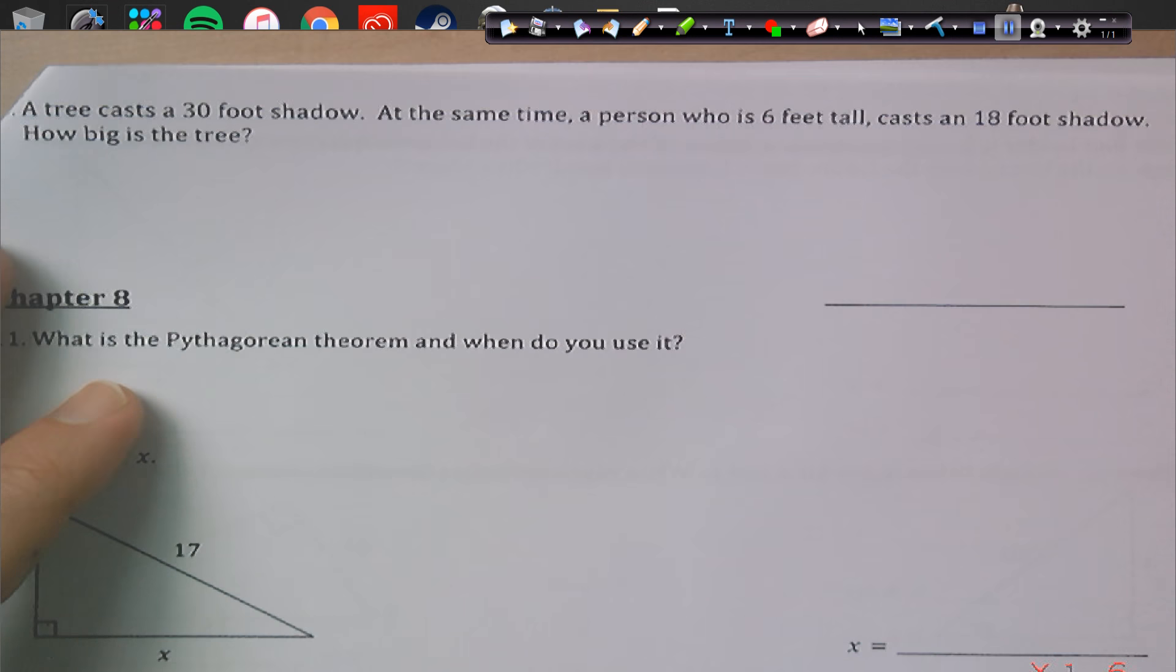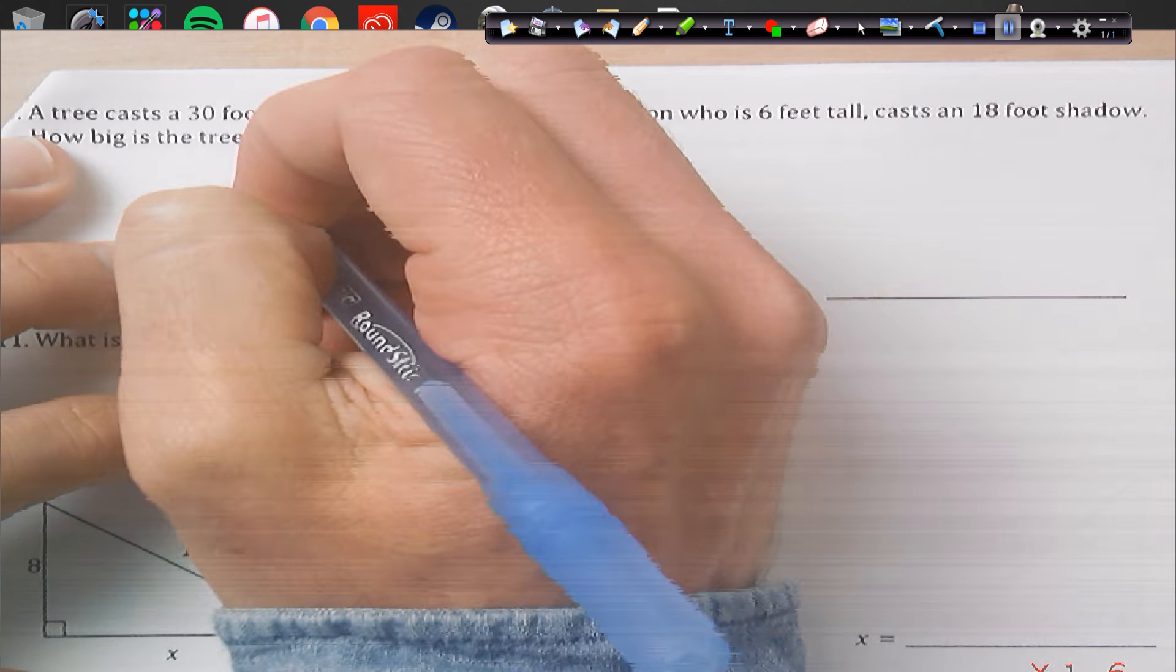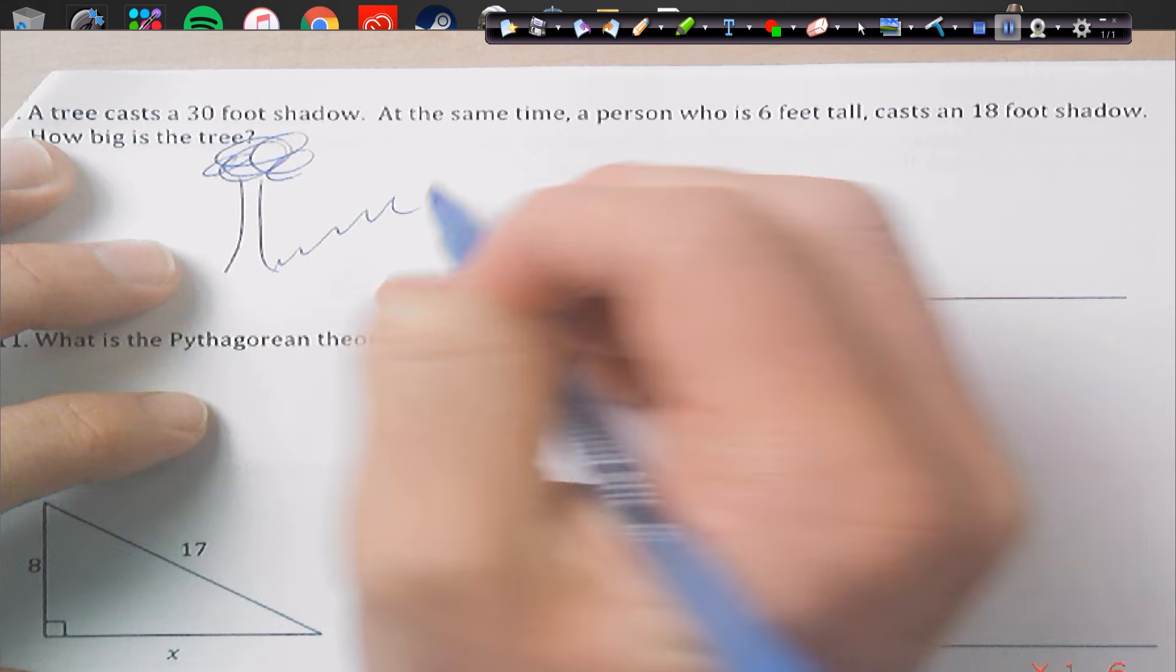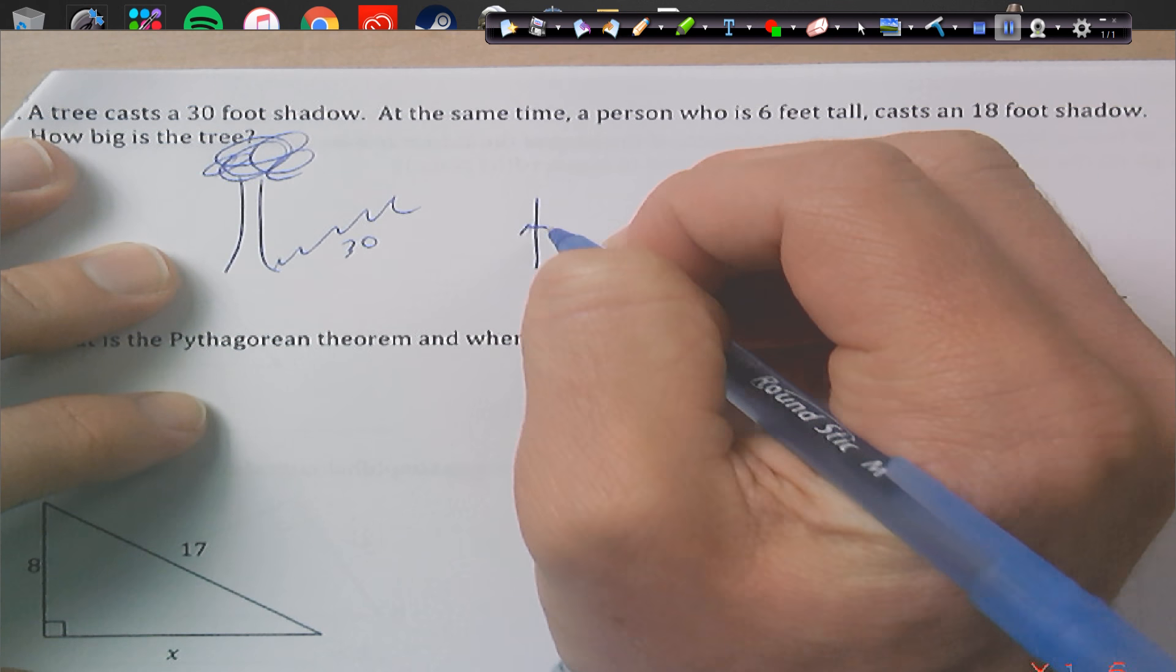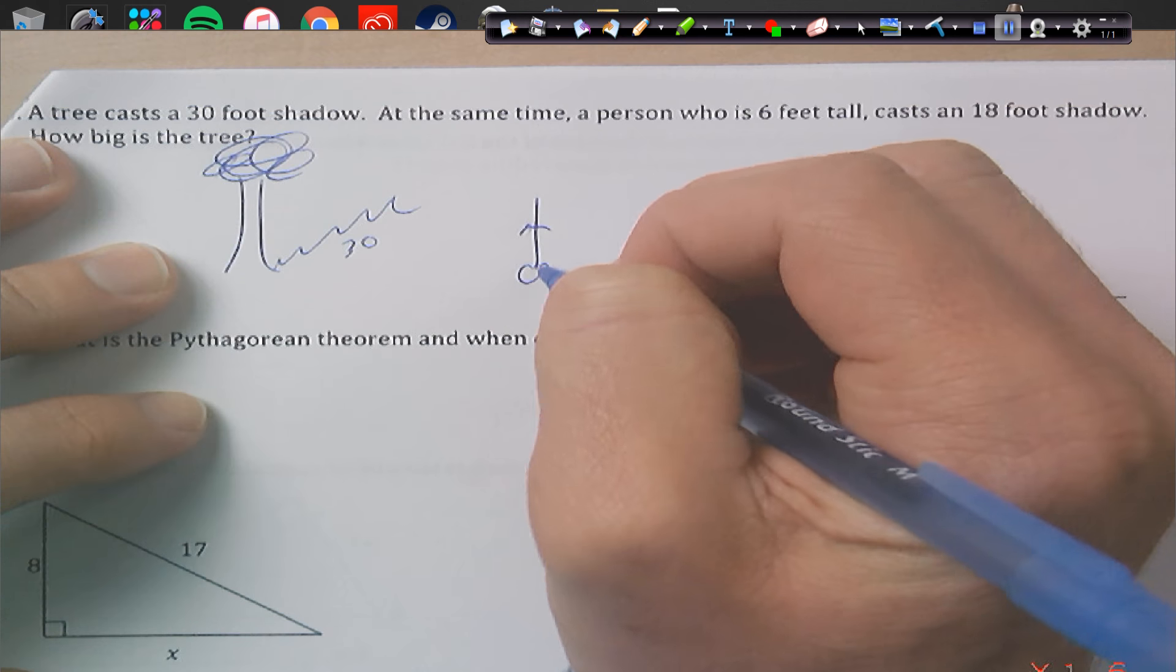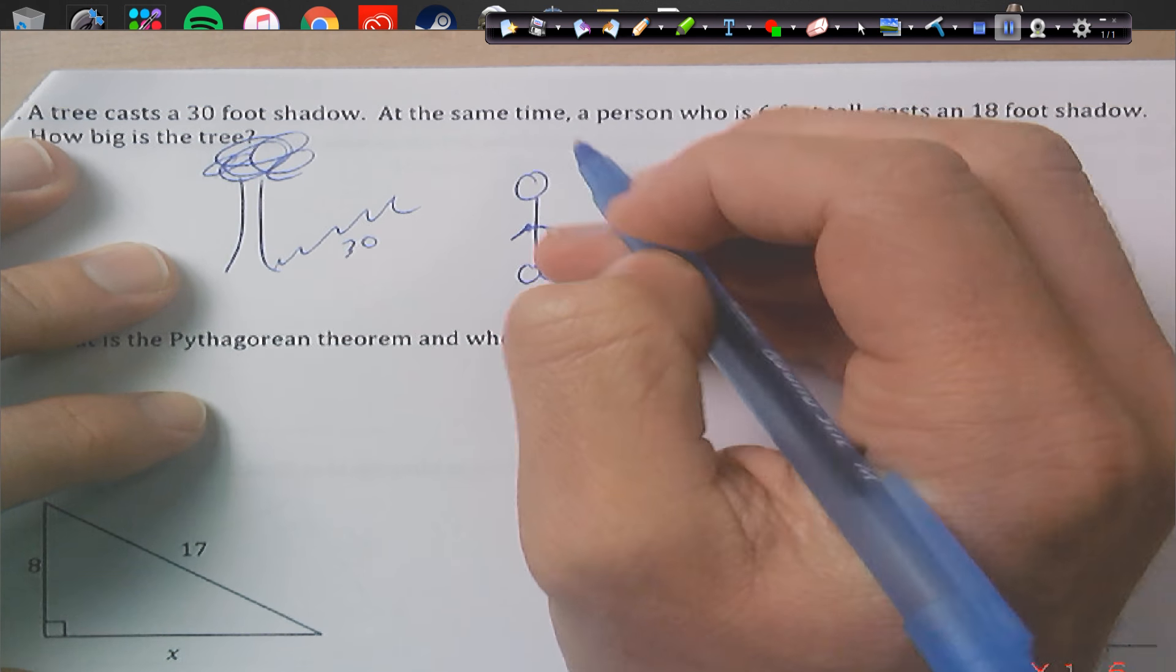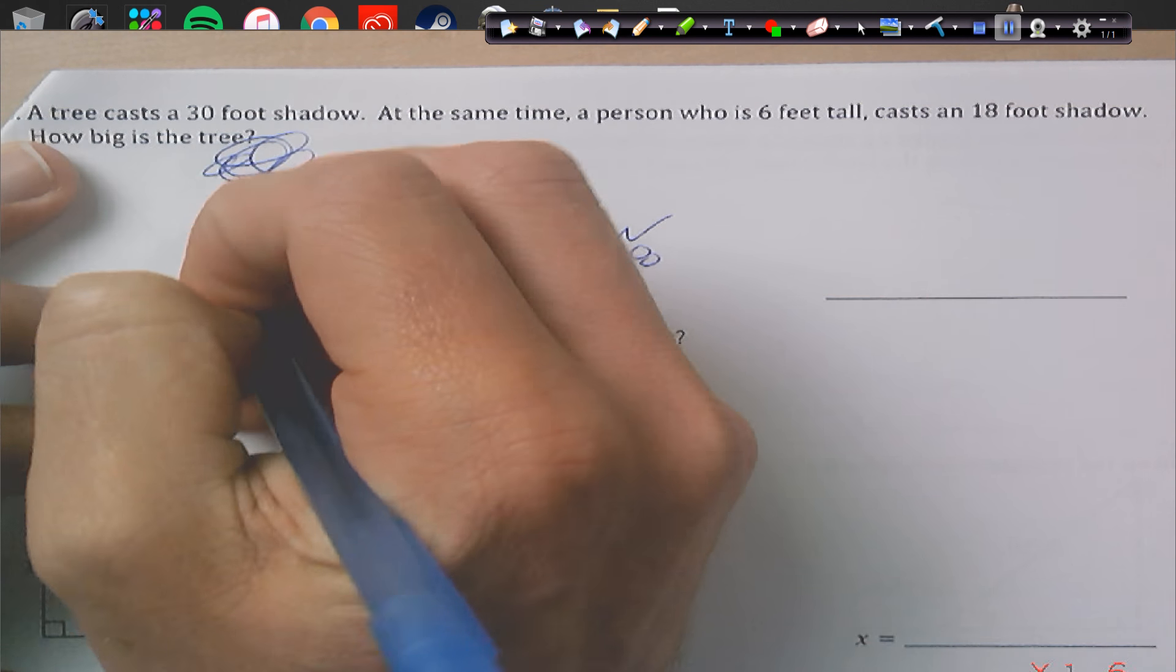A tree casts a 30-foot shadow at the same time. The person is 6 feet tall casts an 18-foot shadow. How tall is the tree? So we have a tree. So we have a tree with a shadow. The shadow is 30 feet. We have a person. Those are his shoes, I guess. I don't really know what I'm drawing. And he is 6 feet tall, and he casts an 18-foot shadow.